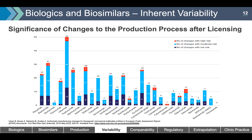What is the significance of changes to the production process after licensing? When biologics were first developed, it was assumed the approved manufacturing process would not change. However, as scientific data matured, companies have made changes for non-medical reasons. Regulators like Health Canada take a risk-based approach when evaluating potential impact. Low-risk changes may require little evidence; high-risk changes may require extensive evidence or even a clinical trial. Relevant to oncology biologics used in Canada: rituximab has had 23 changes, one considered high risk; trastuzumab has had 26 changes, two considered high risk; and bevacizumab has had 12 changes, none considered high risk.